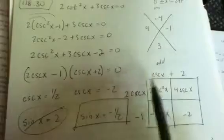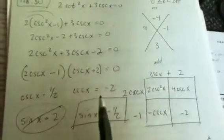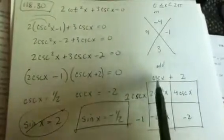And then you ask yourself, what times what equals 2 cosecant squared x? Well, the 2 has to go out here because it goes into 4. If you put it up here, it wouldn't work out. So, I factor. I get cosecant x plus 2 and 2 cosecant x minus 1.